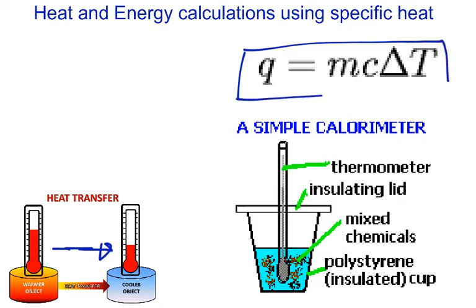Q equals M times C times delta T. Q refers to heat energy and is measured in joules. M represents mass. C is something called the specific heat capacity — it's the amount of energy needed to raise the temperature of one gram of substance by one degree. And delta T represents change in temperature.